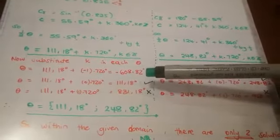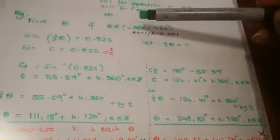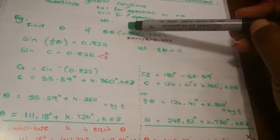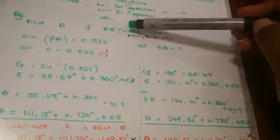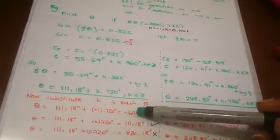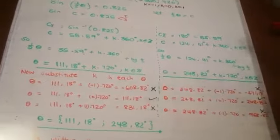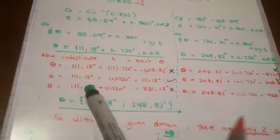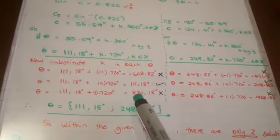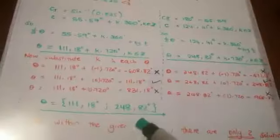Now if you check this one, negative 608.82, it is below the restriction. The restriction said we must have values that are between negative 360, so this one is smaller than negative 360, so it doesn't qualify to be our answer, so we leave it out. And then this one as well, 831 is over 720, so it also doesn't qualify as our answer.